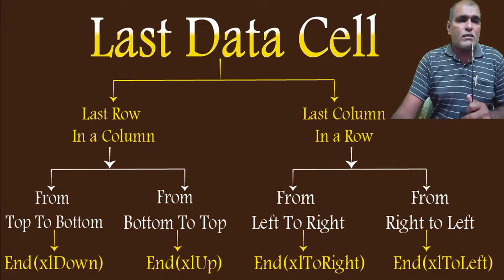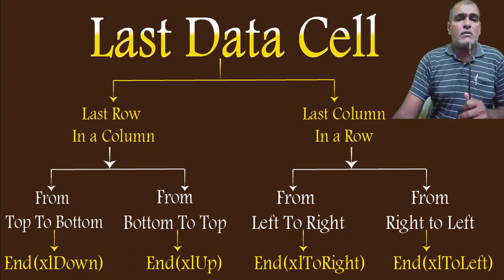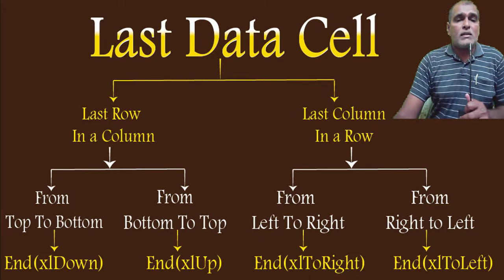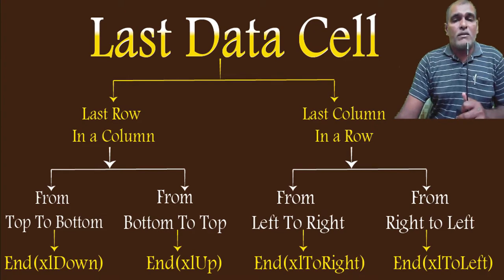Here we can find the classification flow. First one is last row in a column, and second one is last column in a row. To find the last row in a column, we can use two different directions: first one is from top to bottom, and second one is from bottom to top. For last column in a row, we can also retrieve in two different directions: first one is from left to right, and second one is from right to left.